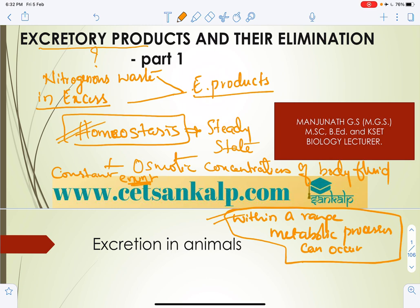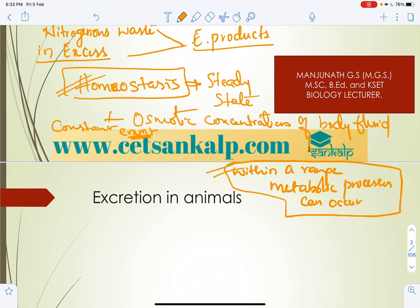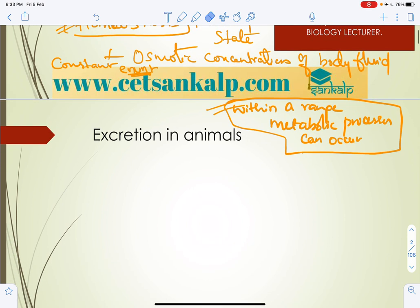In this class we will cover how waste is produced and eliminated from the body, including excretory organs in lower and higher animals, the structure and function of the kidney, structure of the nephron, urine formation, disorders related to urine formation regulation.